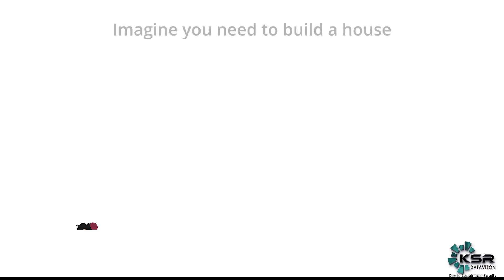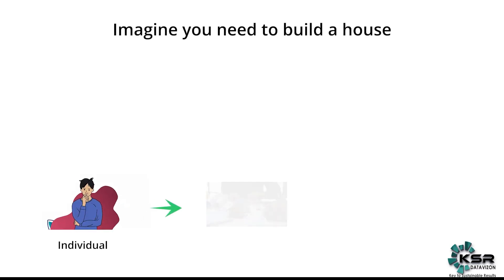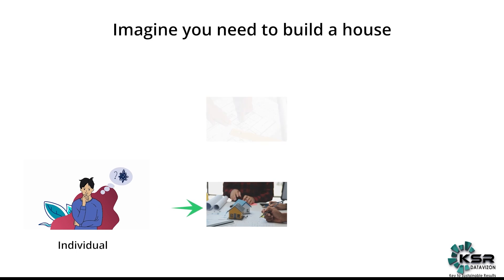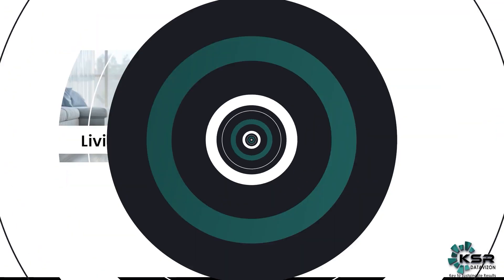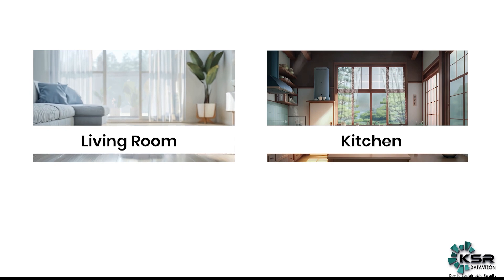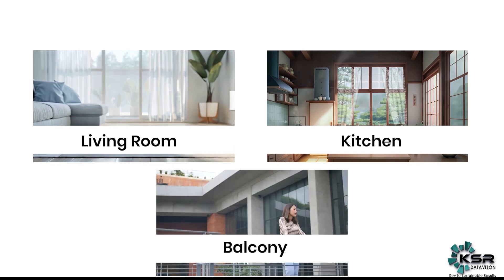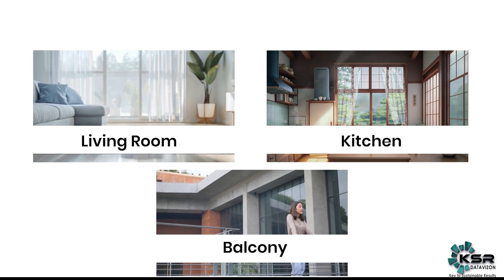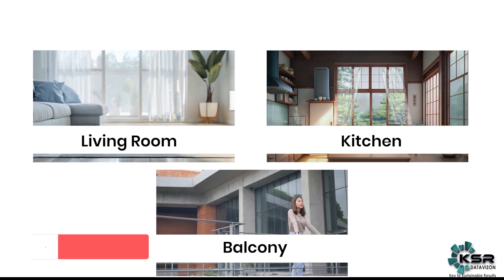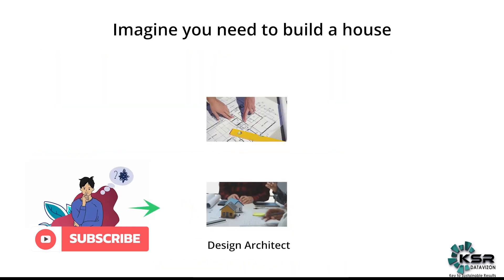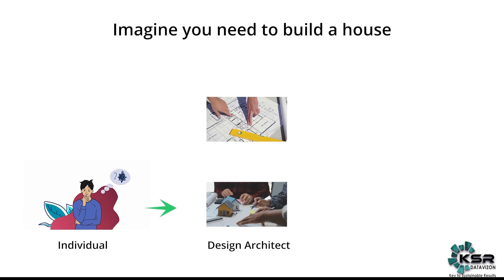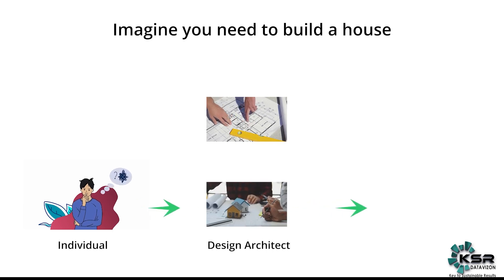Imagine you want to build a house. You reach out to someone who can design a house for you and later have it implemented. You ask for a plan — where exactly should the living room be, where should the kitchen be, what should be the dimensions of your balcony. It's a complete layout that needs to be created before implementation. The person who creates this design we call a design architect, and they plan it for you and send it to the next set of people who are the actual builders.